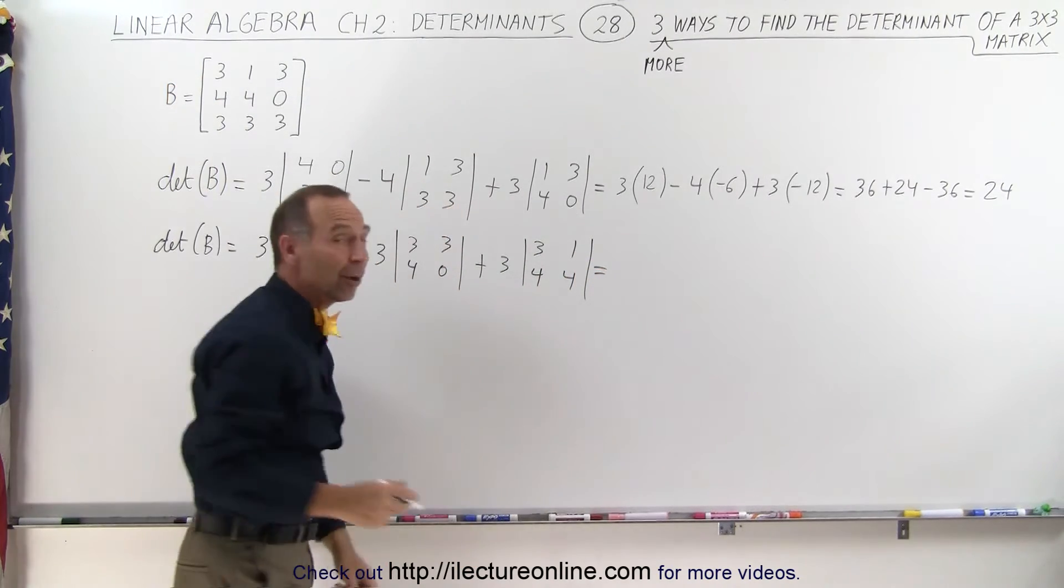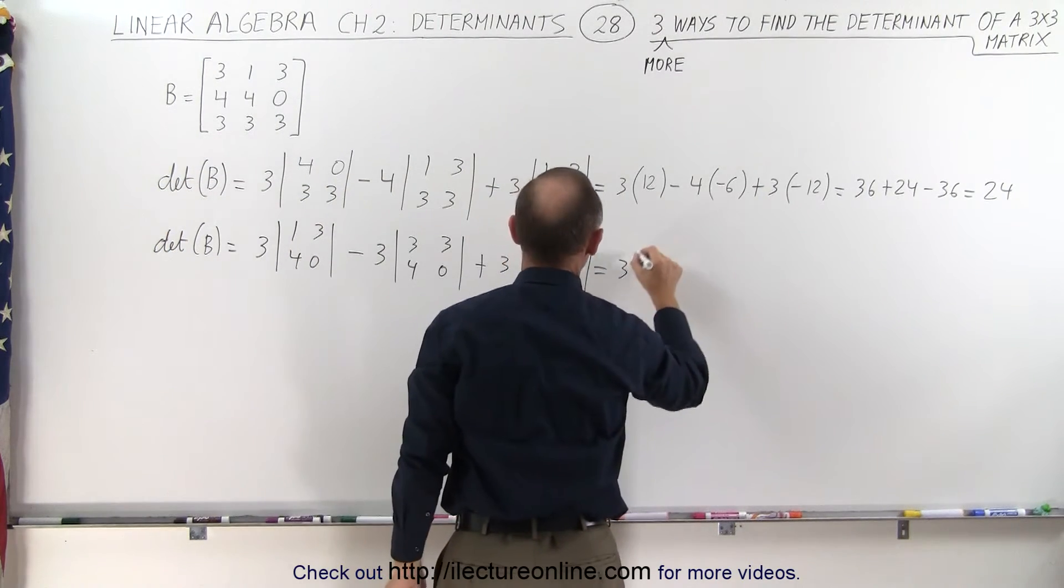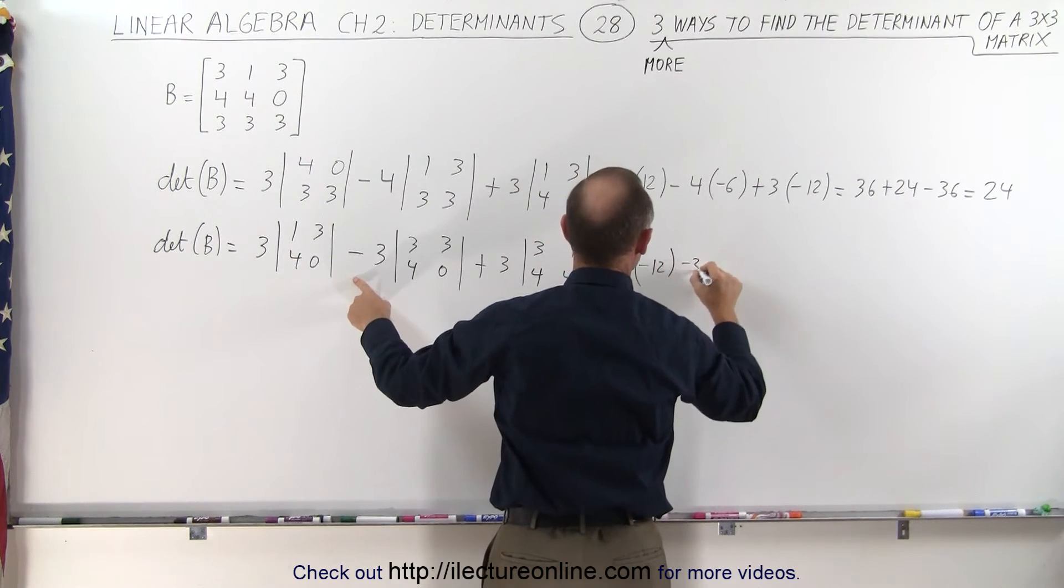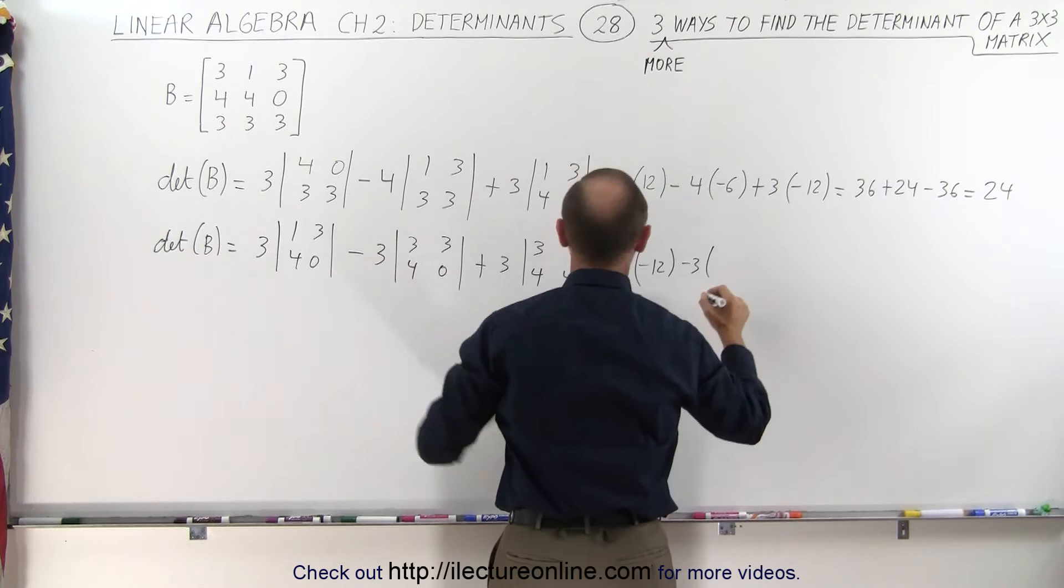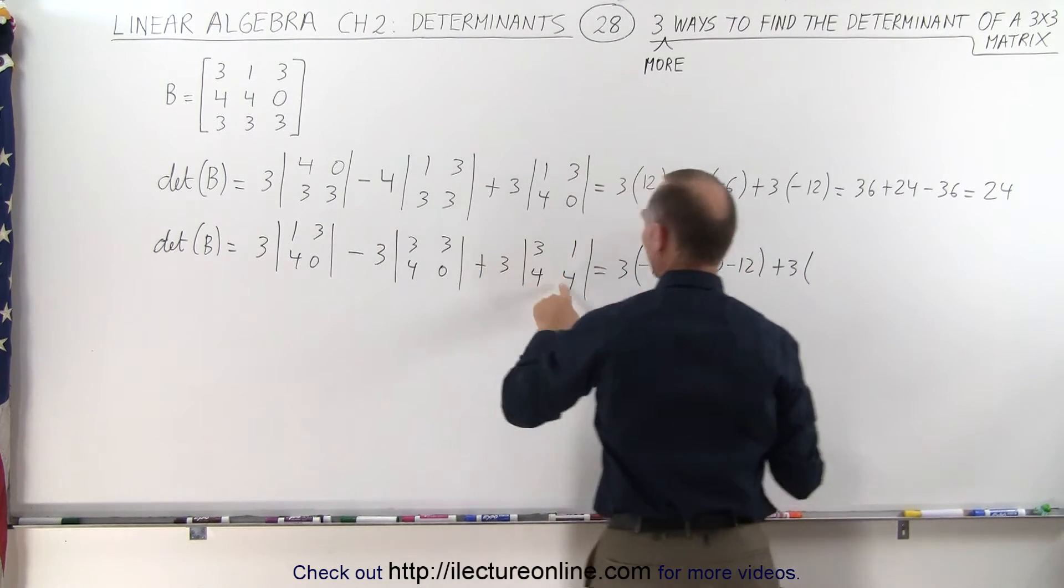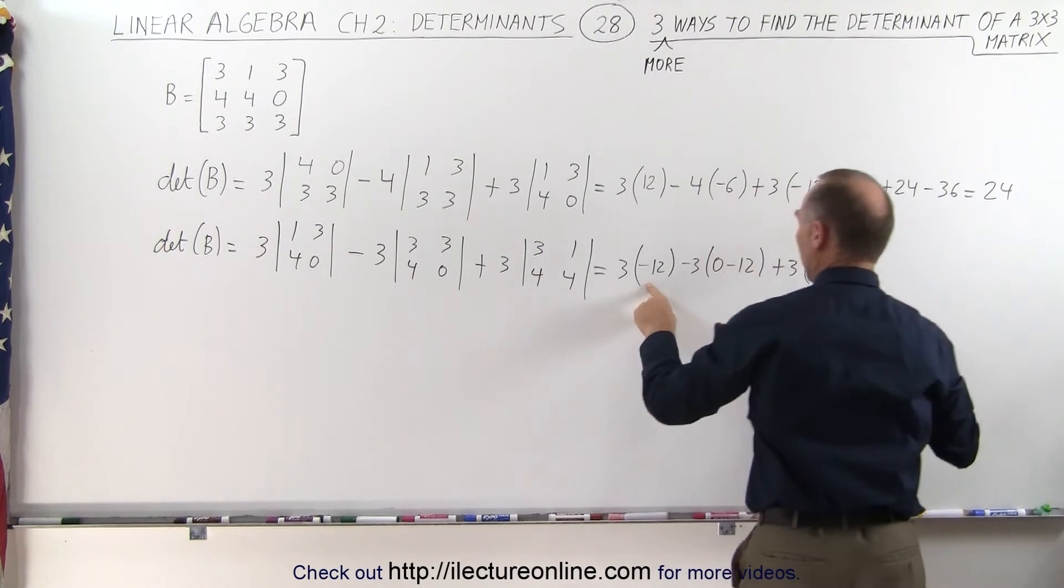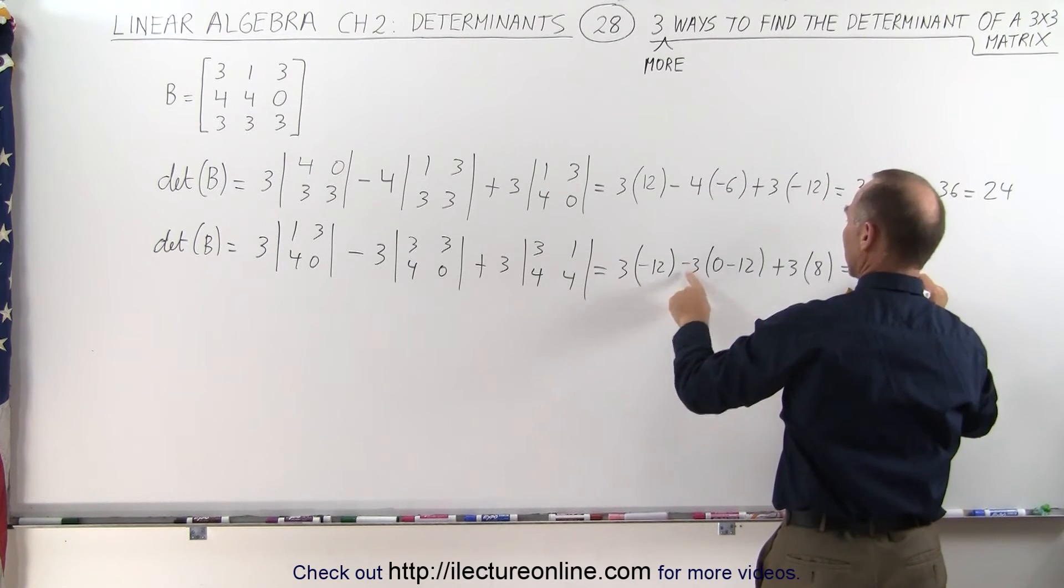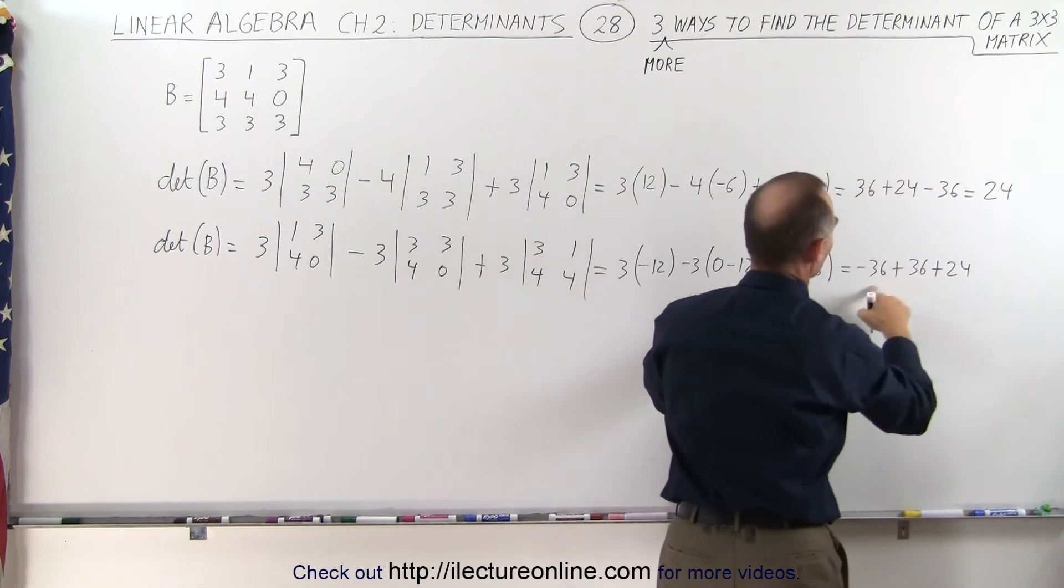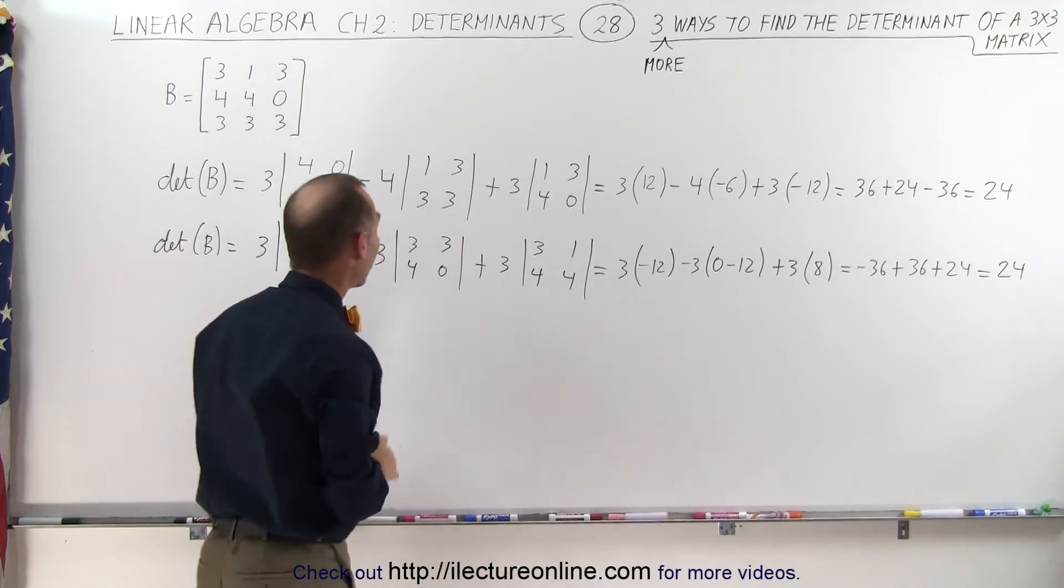And amazingly enough, that works as well. Let's try it out and see what we get. This is 3 times 0 minus 12, minus 3 times 0 minus 12, plus 3 times, we get 12 minus 4, which is 8. So this gives us a minus 36, that gives us a plus 36, and a plus 24. The 36s are cancelled out, and indeed, we get the same result, 24, which is the determinant of B.